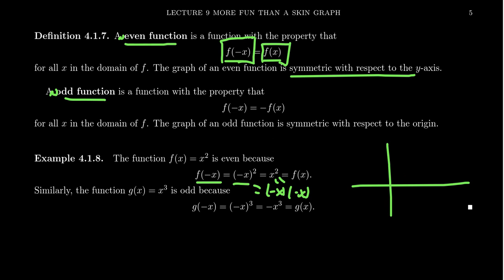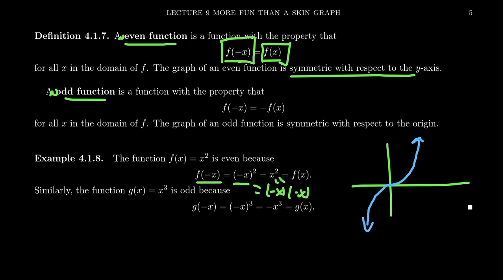Let's take y equals x cubed as an example of an odd function. Its graph looks something like the following. If you were to take this graph and do a half spin around the origin, you get the exact same graph again. Algebraically, if g of x equals x cubed, then g of negative x is negative x cubed. If you take an odd power of a negative, it'll still be negative — a triple negative. So you get negative x cubed, which is negative g of x. This is an example of an odd function.